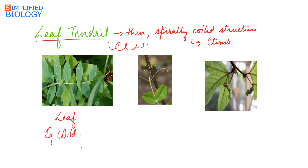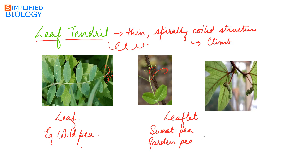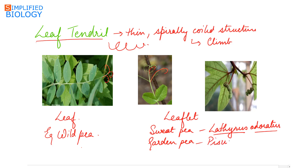Example of complete leaf tendril is wild pea. Or the leaflets get modified into tendrils, as seen in sweet pea and garden pea. Sweet pea is Lathyrus odoratus, while garden pea is Pisum sativum. Leaf tendrils are characteristic of family Fabaceae.